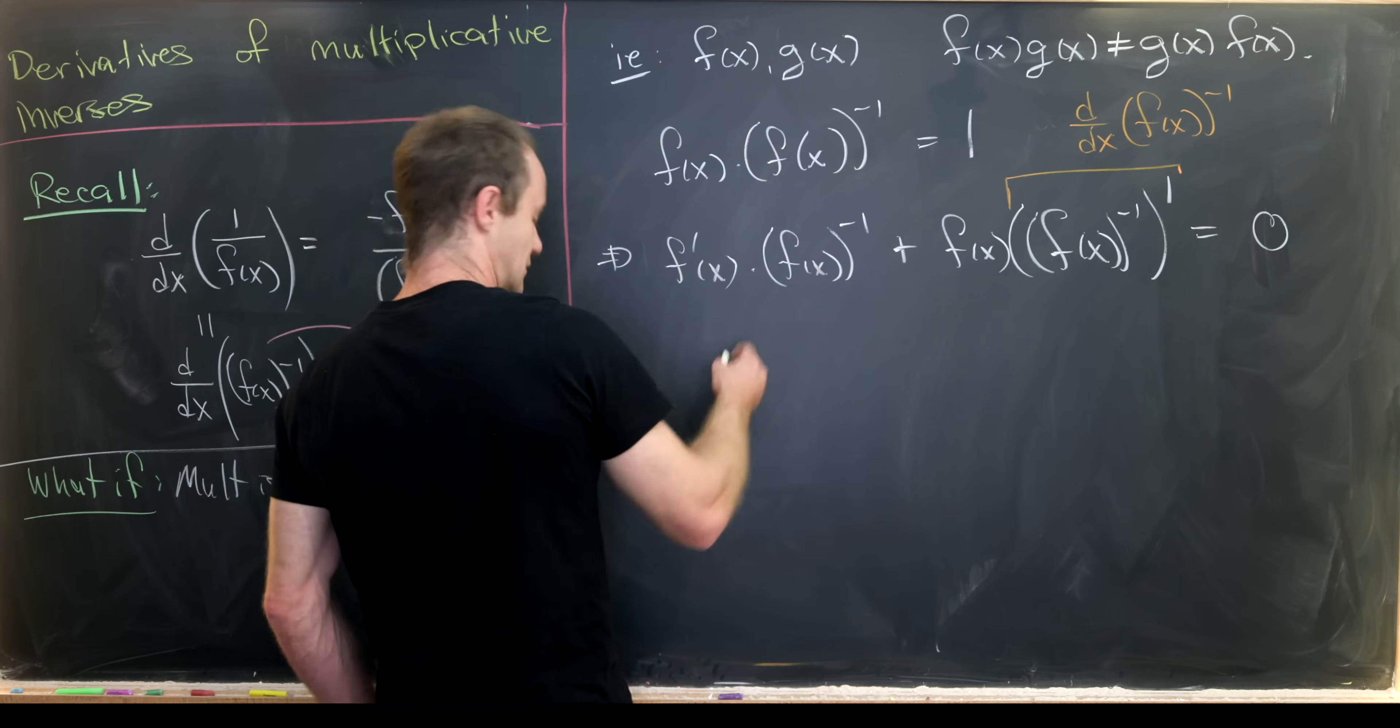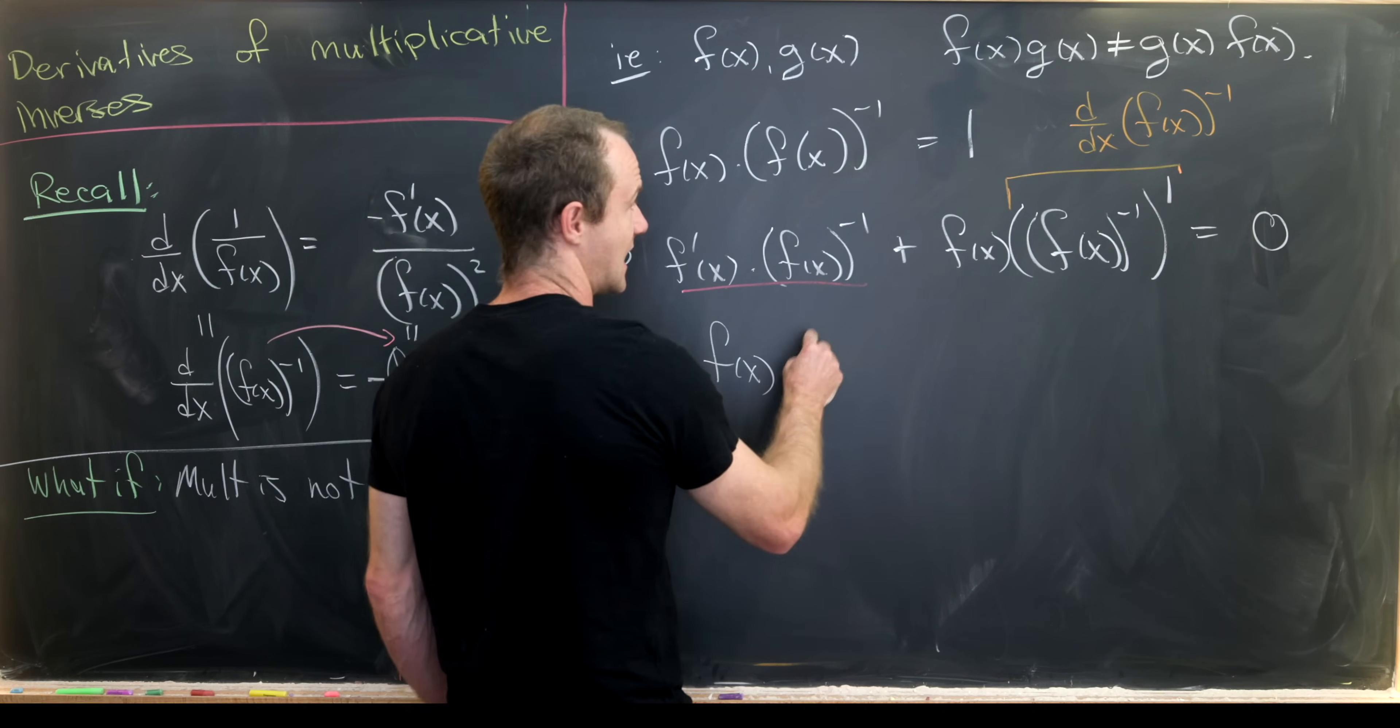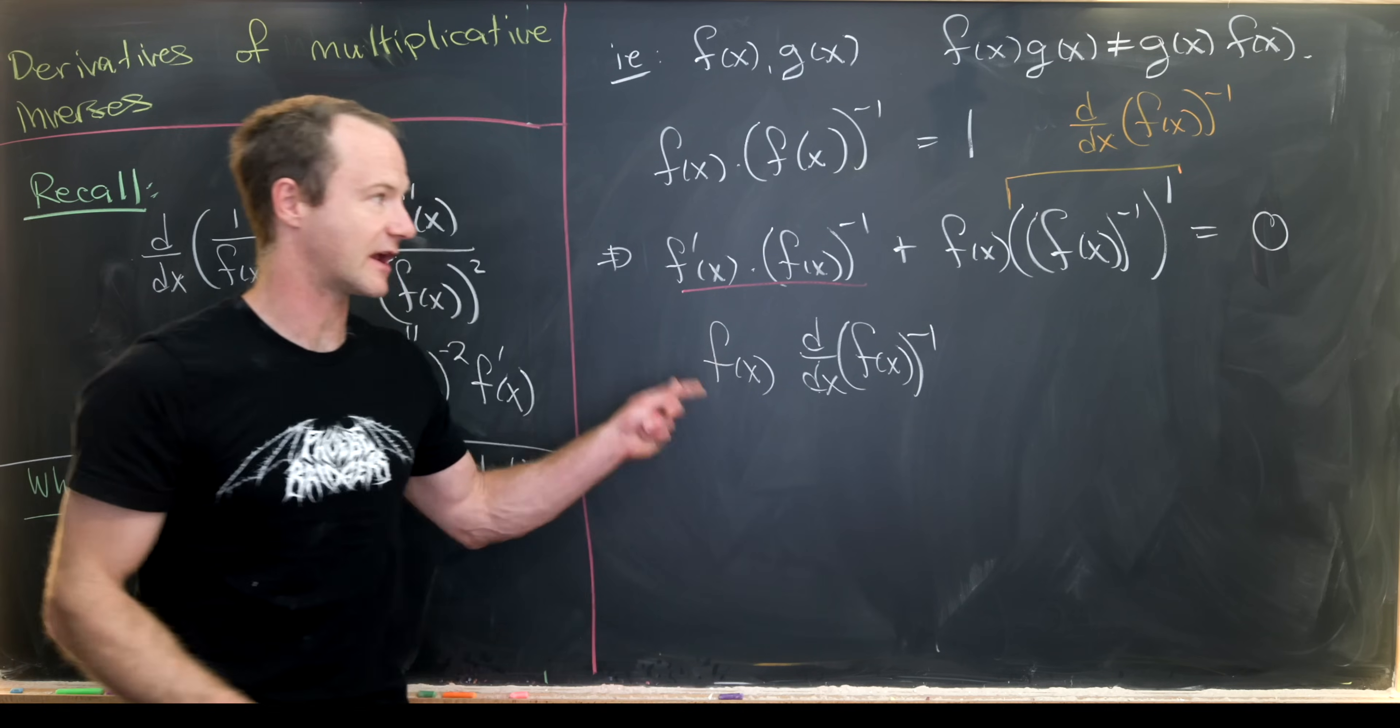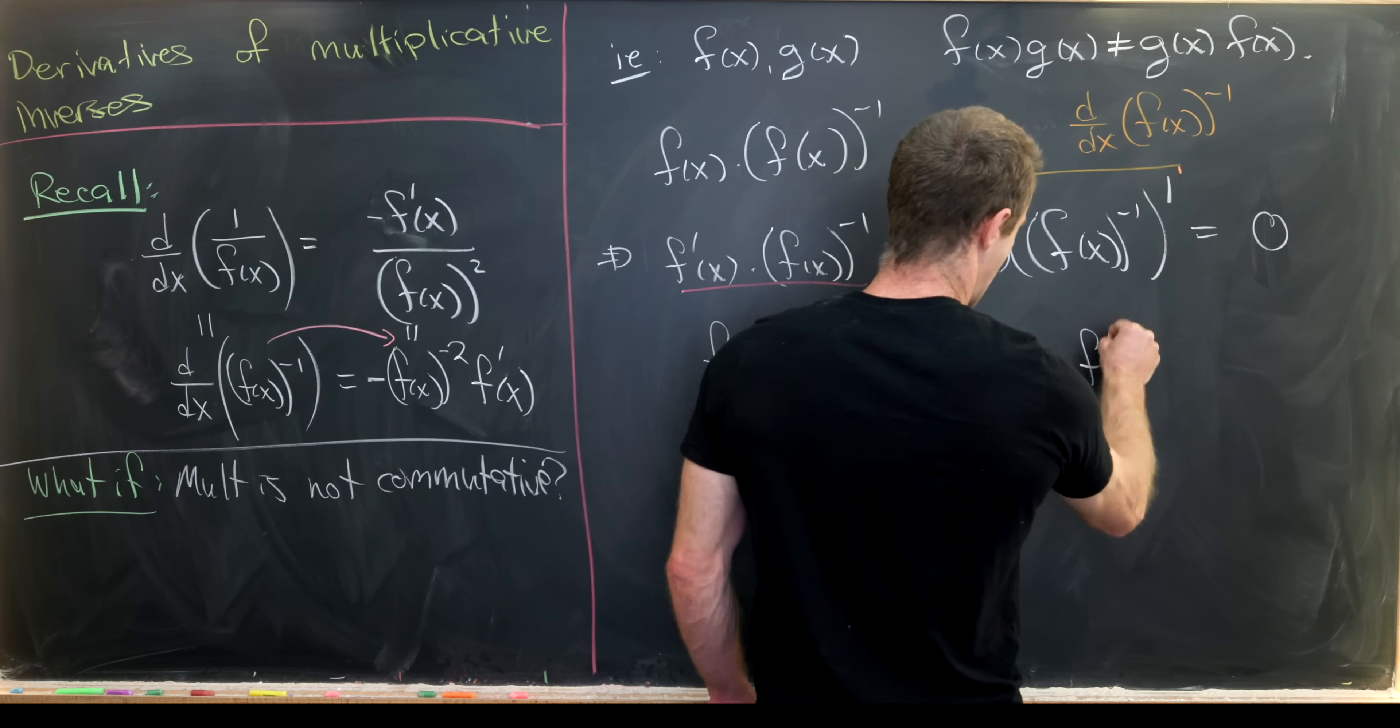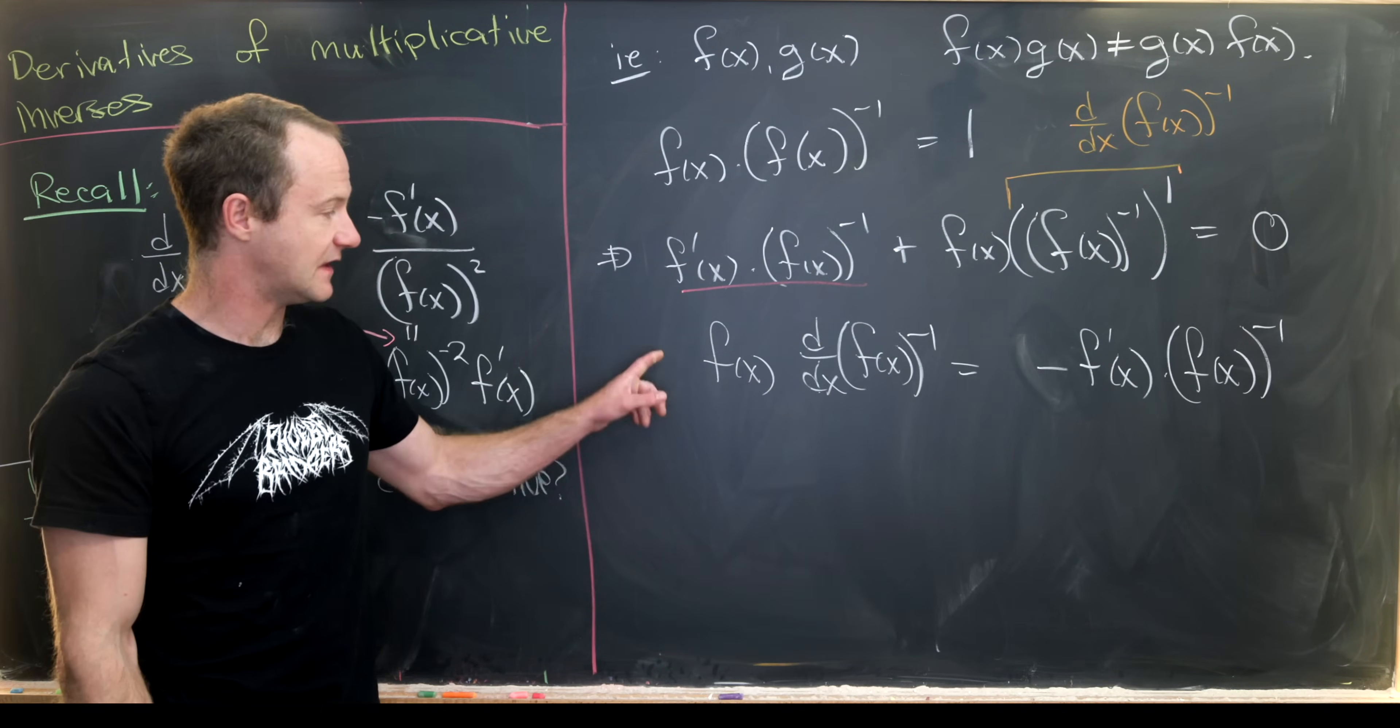We can move this term, which I'm underlining in red, over to the other side of the equation. That'll give us f(x) times the derivative with respect to x of f(x) to the negative 1st power. I'll rewrite it like that because I think it's a little cleaner. That equals negative f'(x) times f(x) inverse.